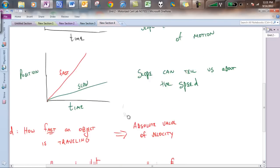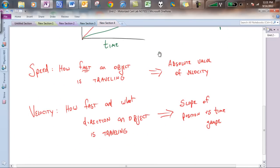The first definition that I want to bring to your attention is speed. Speed is how fast an object is traveling. And then we're going to come up with another definition. This is a different word called velocity. This is how fast and what direction an object is traveling.